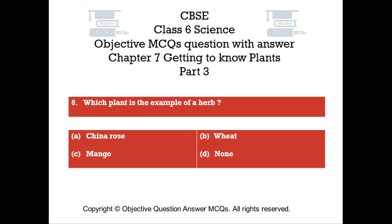Question number 8. Which plant is an example of a herb? Option A: China Rose. Option B: Wheat. Option C: Mango. Option D: None.